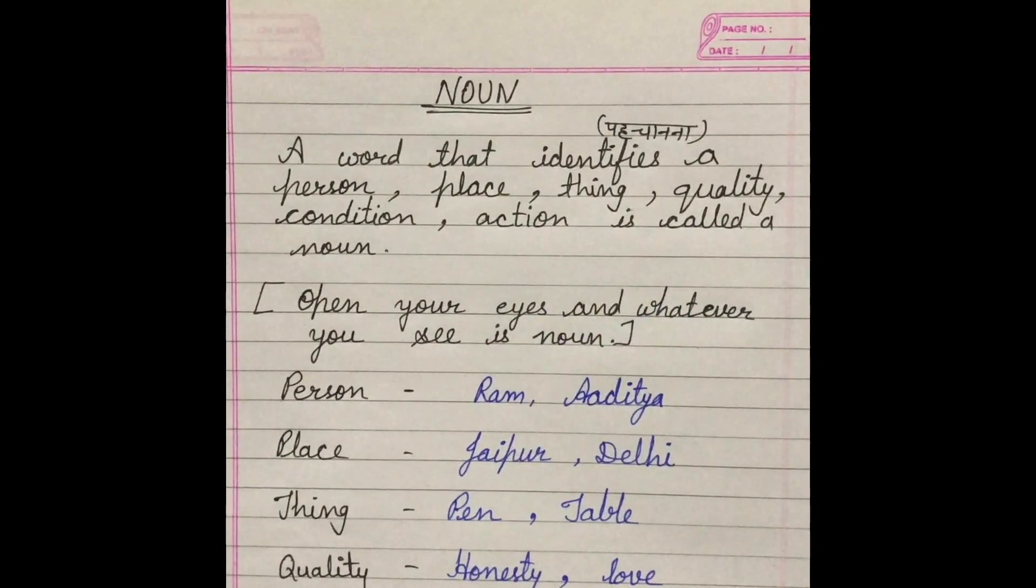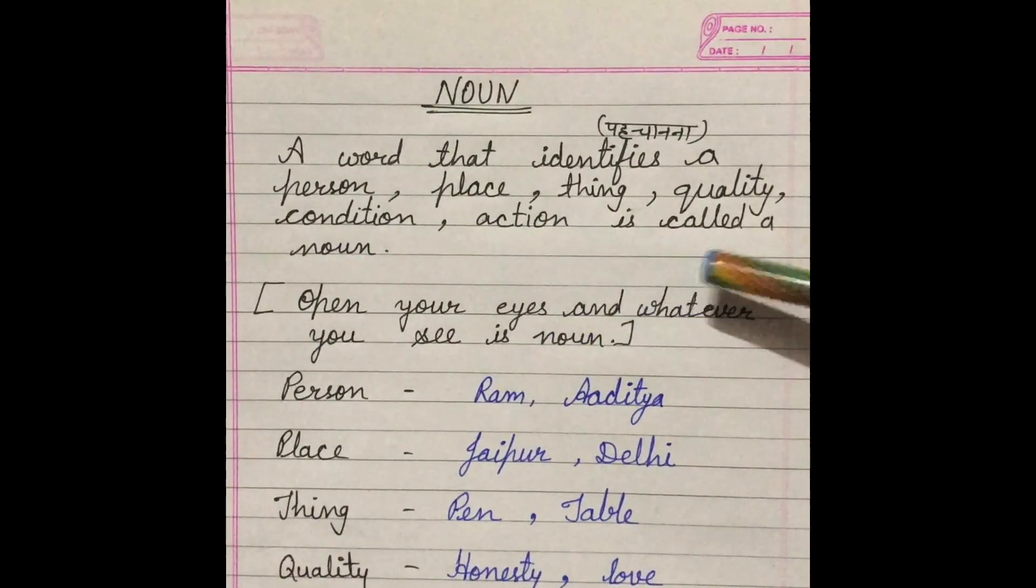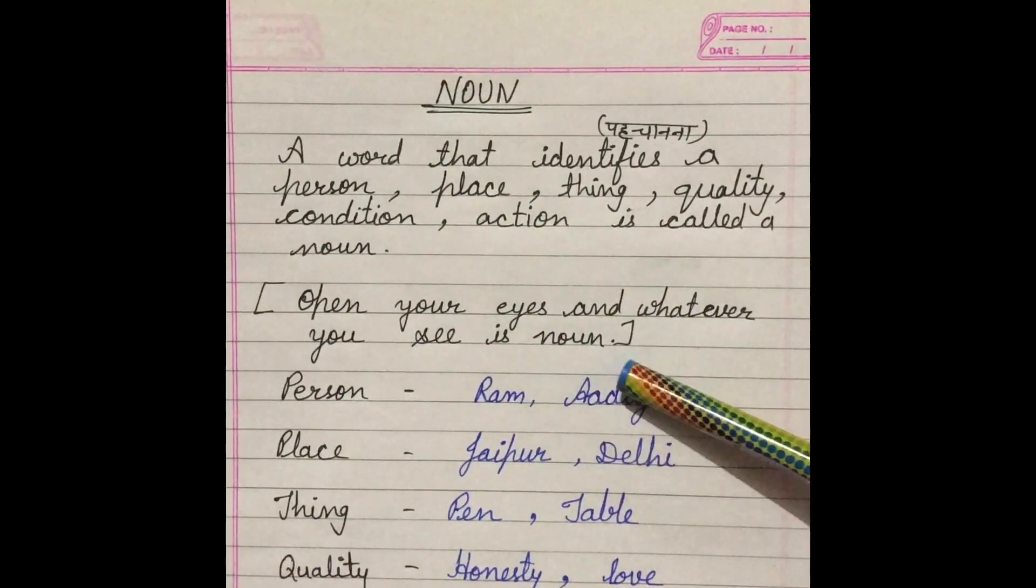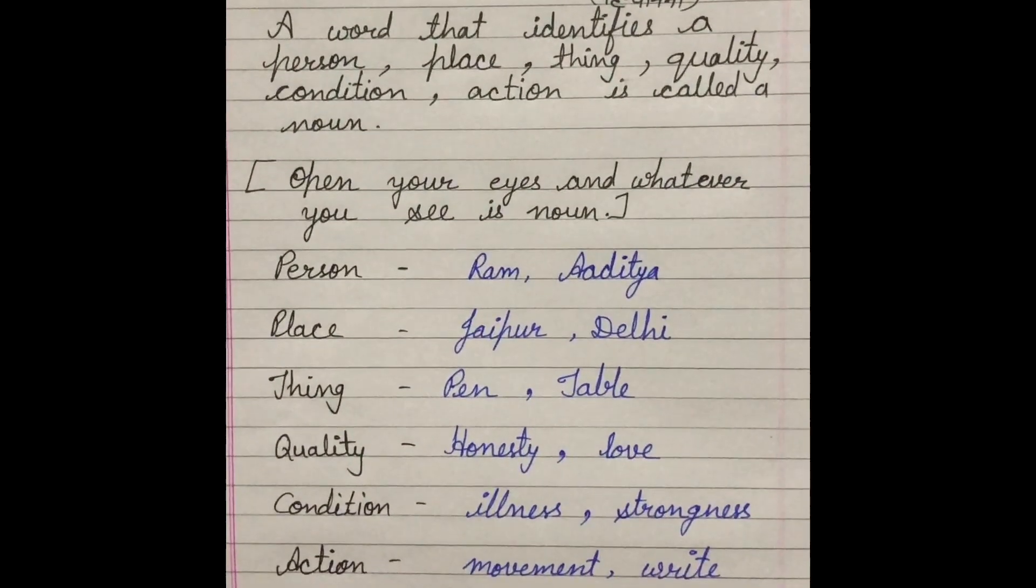In short, in easy way, we can say open your eyes and whatever you see is noun. Apni aankhe kholo aur aap jo kuch dekhte hain apne aaspas, jo kuch aapko dikhai deta hai, woh sab kya hai? Noun.